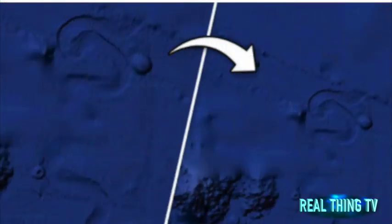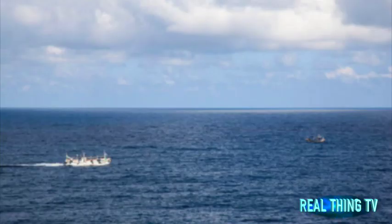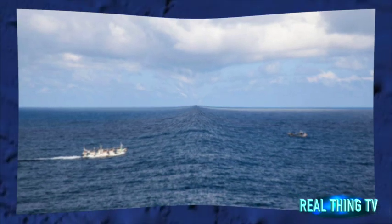There are certain areas of the ocean that are obviously blurred out. But what better place would there be for another race or another group of beings to hide than in the deep of our own oceans?